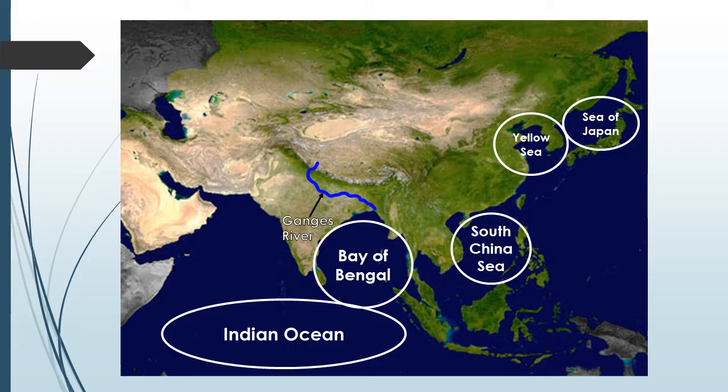The first river is the Ganges River. It flows through India and Bangladesh. It's a sacred river to Hindus but has recently become polluted with waste.